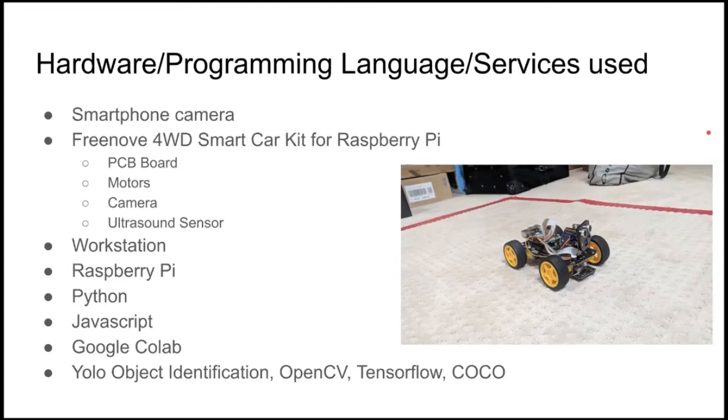Additionally, we were using a workstation. In our case, the workstation was just a laptop that would communicate between the Raspberry Pi and the laptop. The Raspberry Pi was used in order to control the robot car. Additionally, we used Python and within Python we used libraries called YOLO object identification. YOLO object identification is a neural network algorithm that can be trained. We actually trained this neural network algorithm using Google Colab and we just rented some GPU space from there.